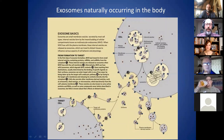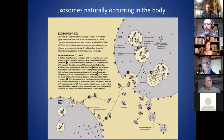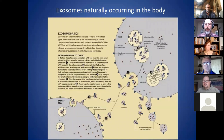These exosomes leave the cell, and you can see they have these little squares on them — these act like a lock. They go around the body through the circulation looking for the right key to fit their lock, and that's called the target cell. Depending on what kind of cell releases them, they might have different keys and locks, so they're targeted to different parts of the body. These are mostly thought to involve communication between one cell and another, between one part of the body and another.